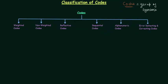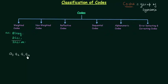We will now move to weighted codes. Most of you already know about weighted codes because we have used them in the number system. Some examples are binary code and 8421 code. In weighted codes, each position of a number represents a specific weight. For example, in the 8421 code, if we have four digits a3, a2, a1, and a0, the weight of the first position is 1, second is 2, third is 4, and fourth is 8.